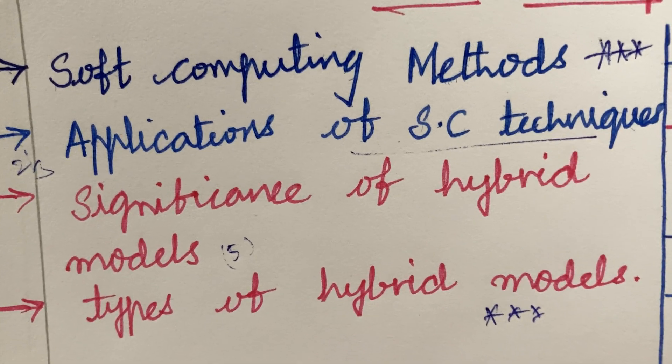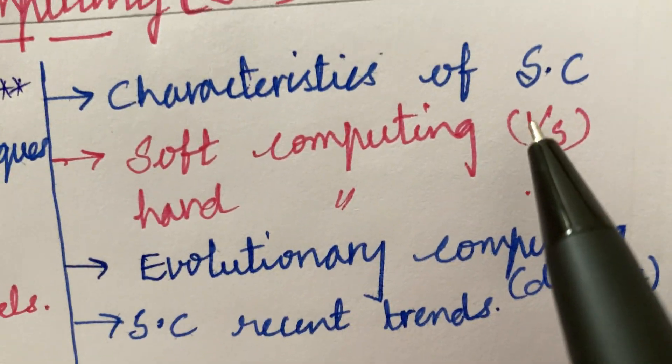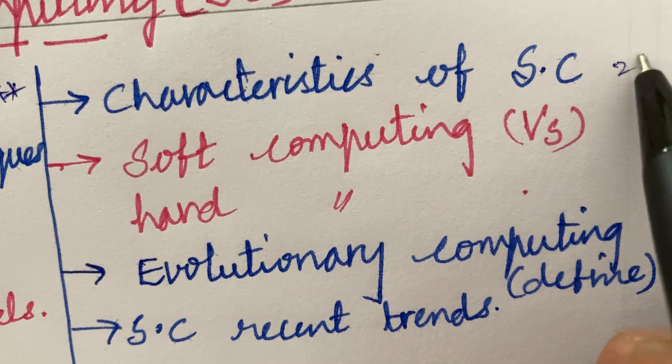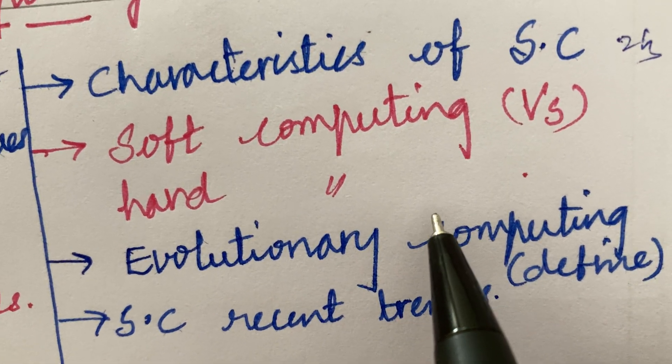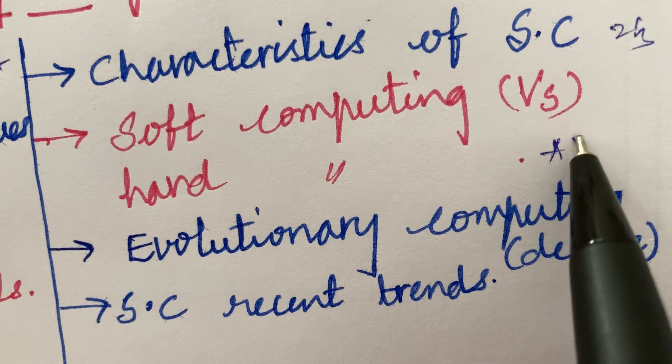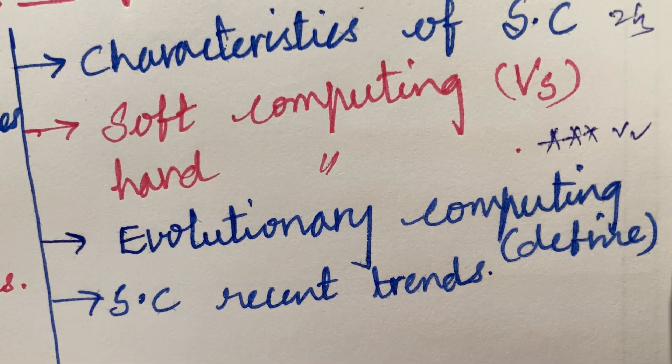The types of hybrid models is also said to be one of the B part. Later, the characteristics of soft computing may be a 2 or 3 mark question and the differences between soft computing versus hard computing may be a direct 10 mark question sometimes.